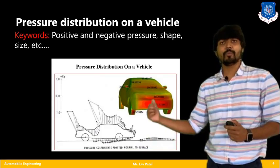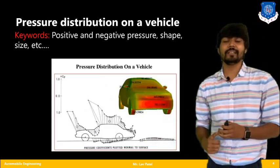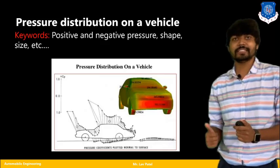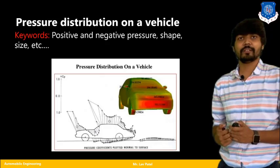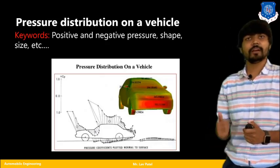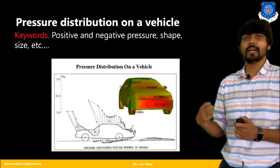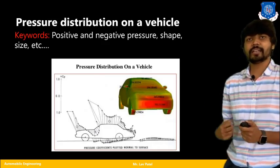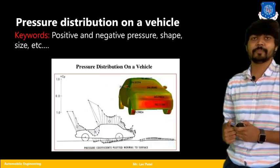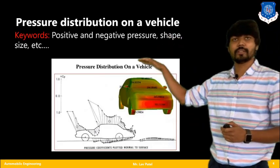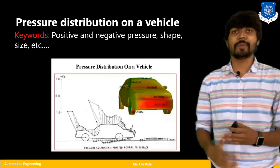At the windshield area, at the bottom of the windshield, you will find positive pressure. This is because air coming from the front needs to flow into the combustion chamber via the intake manifold for combustion, so positive pressure is required there. At the top portion, due to the slope and aerodynamically perfect shape, negative pressure is present.